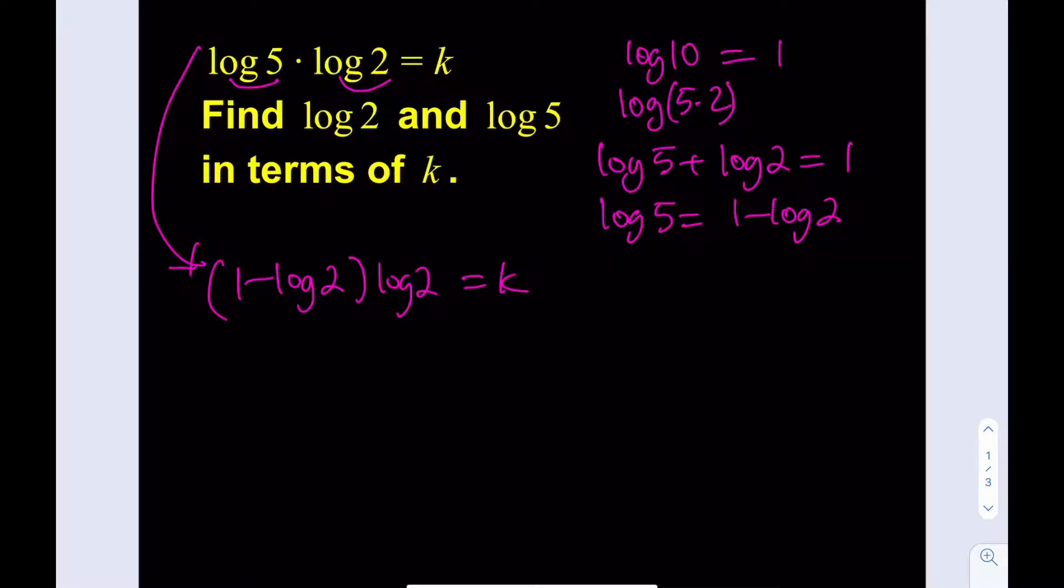If we distribute here, we get log 2 minus log 2 quantity squared equals k. This is going to be a quadratic equation in log 2. Let's put everything on one side. So it's log 2 squared minus log 2 plus k equals 0.